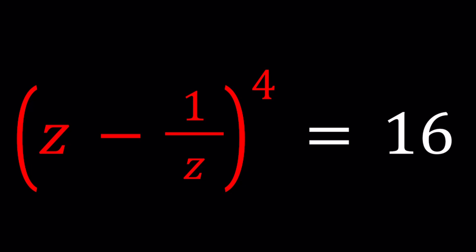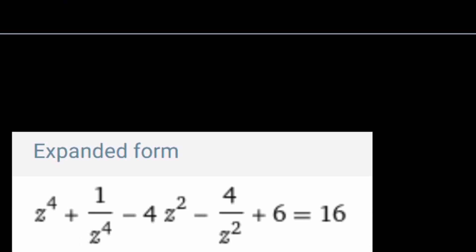We have z minus 1 over z to the fourth power equals 16 and we're going to be solving for z values. Try to guess the solutions at this point and then check your answers against mine. I'll be presenting two methods. But before we start solving this problem, let's take a look at the expanded form.